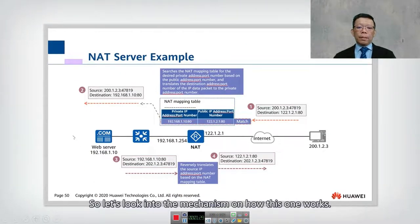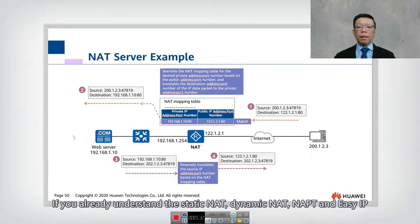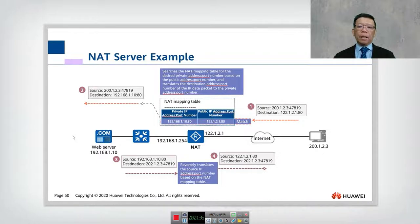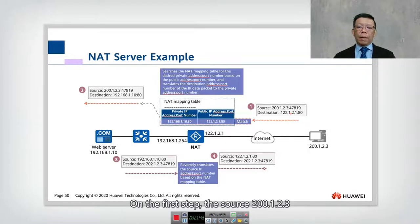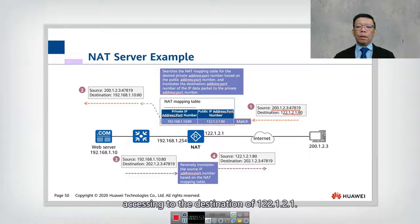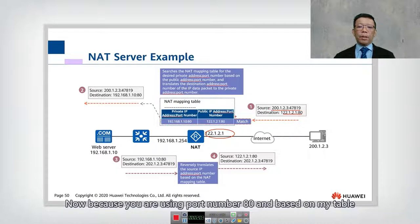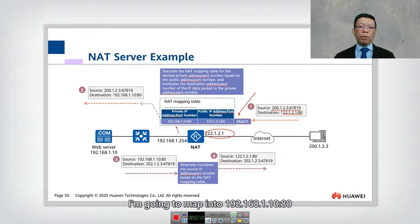Let's look at how this mechanism works. If you already understand static NAT, dynamic NAT, NAPT, and Easy IP, this is basically the same. In the first step, the source 200.1.2.3 with a random port number of 47819 accesses the destination 122.1.2.1, which is the NAT public IP. Because it's using port 80, based on the mapping table, the public IP port 80 maps to 192.168.1.10 colon 80 internally.